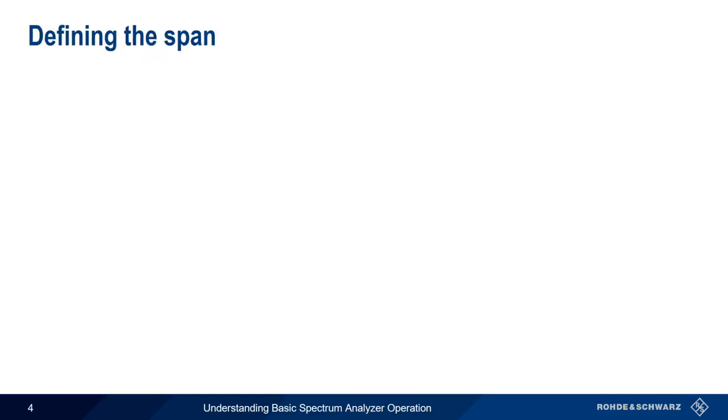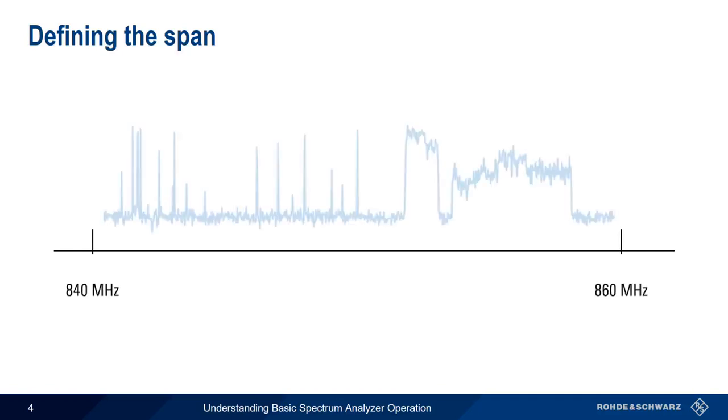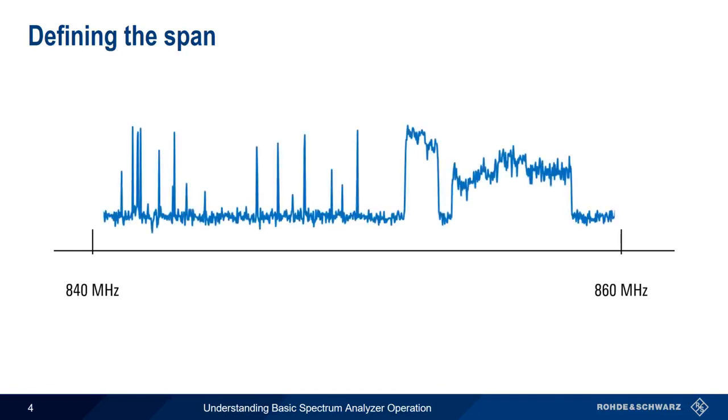The very first question you have to answer when making spectrum measurements is, what frequency range am I interested in? In other words, what are the start and stop frequencies? Let's say we're interested in measuring power between 840 and 860 megahertz. We could enter these values into a spectrum analyzer as start and stop frequencies, but most people who use spectrum analyzers on a regular basis enter these values a different way, namely as center and span.